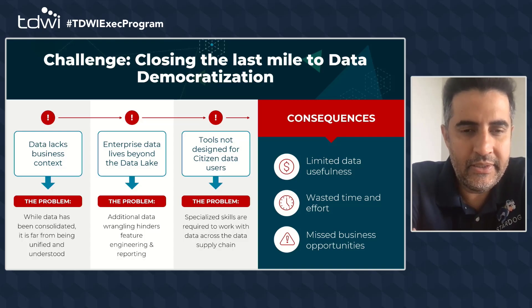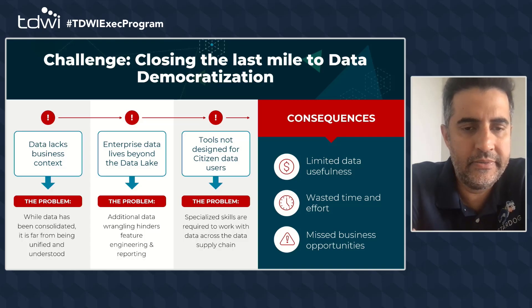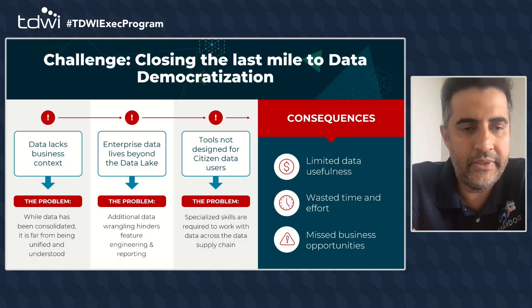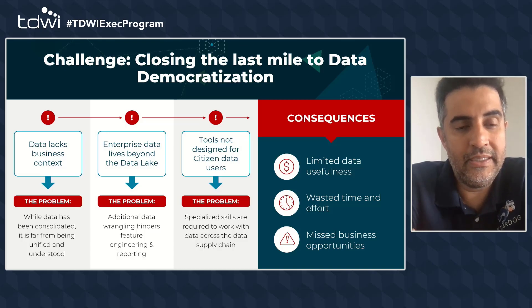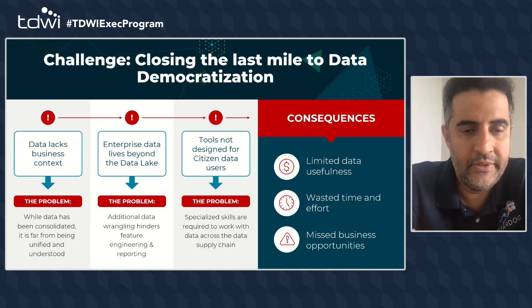The first theme is that data still lacks business context. Data is consolidated and co-located, but it doesn't provide business context. When data gets pulled in from various source systems, it loses that context. These source systems are designed with a specific business process in mind, and when you bring data out of those systems and land them into a data lake or cloud data warehouse, you often lose that context. You also want to understand what data means and how it relates when you connect it across silos.